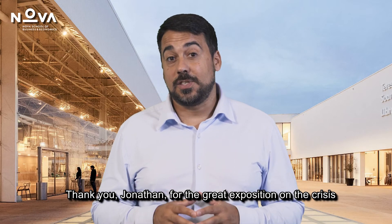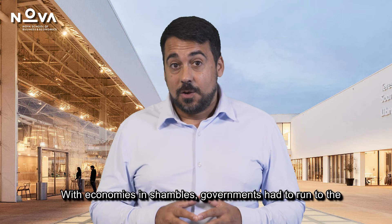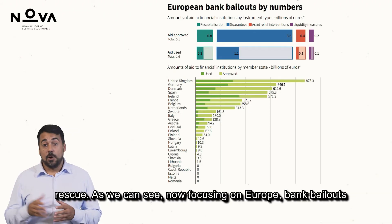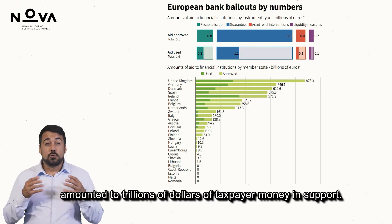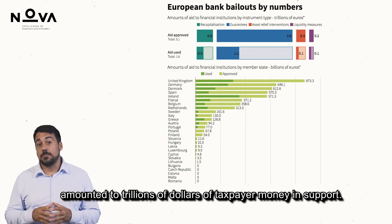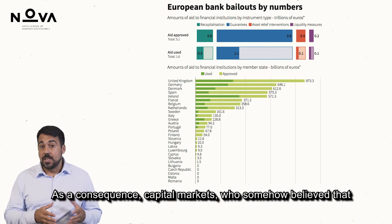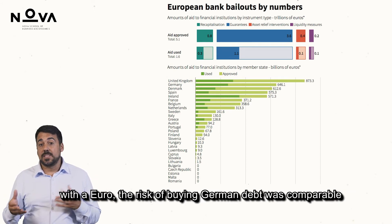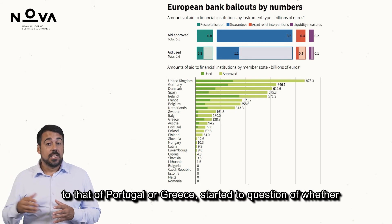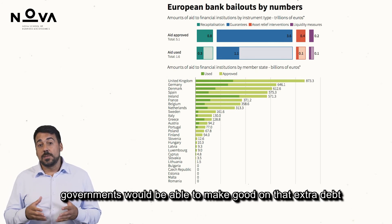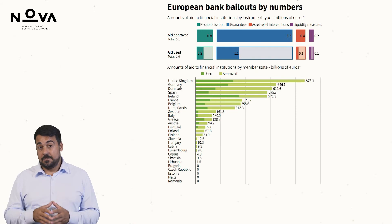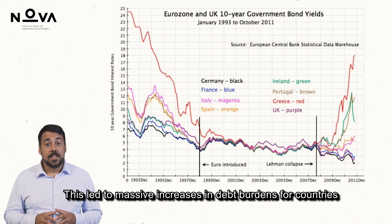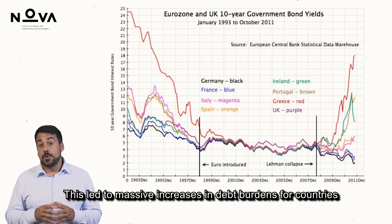Thank you, Jonathan, for the great exposition on the Crisis of Credit. With economies in shambles, governments had to run to the rescue. Now focusing on Europe, bank bailouts amounted to trillions of dollars of taxpayer money in support. As a consequence, capital markets — who somehow believed that with the euro, the risk of buying German debt was comparable to that of Portugal or Greece — started to question whether governments would be able to make good on that extra debt, and started to demand higher compensation for their loans.